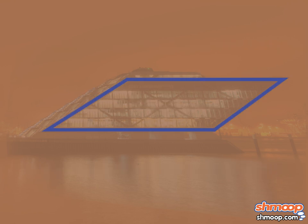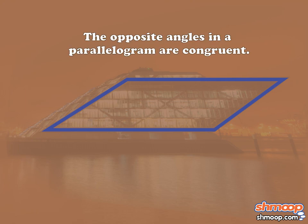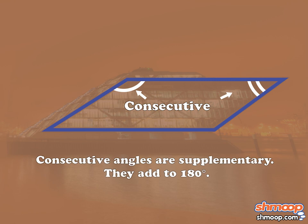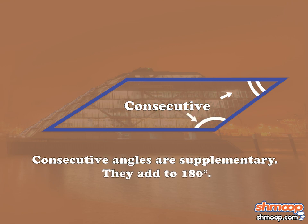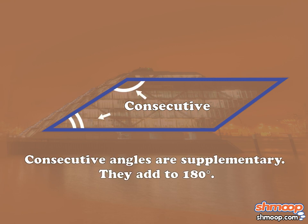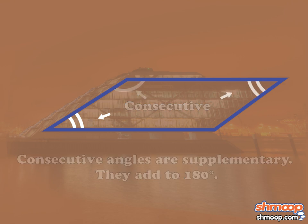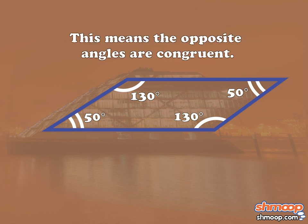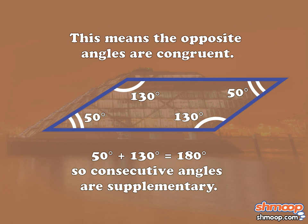All right, looks good. But what about the angles? A parallelogram's opposite angles are congruent, and consecutive angles are supplementary, which means they add to 180 degrees. This building has one pair of opposite angles measuring 50 degrees, and the other pair measuring 130 degrees, which means the pair of opposite angles are congruent. And 50 plus 130 is 180 degrees, so consecutive angles are supplementary.